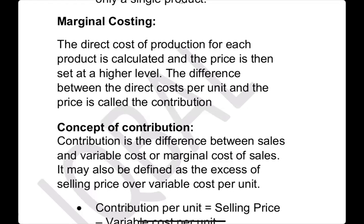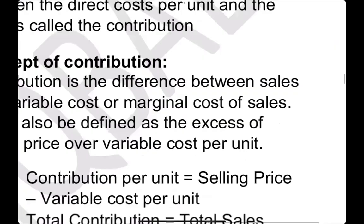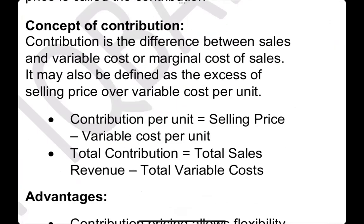Examiner यह test करना चाहता है कि whether you can do a decision on the basis of contribution। Contribution = selling price − variable cost। अगर contribution positive है — selling price minus variable cost is positive — तो project doable है। जब आप grow करेंगे तो fixed cost बाद में allocate करते रहेंगे। यह contribution का concept कहलाता है।